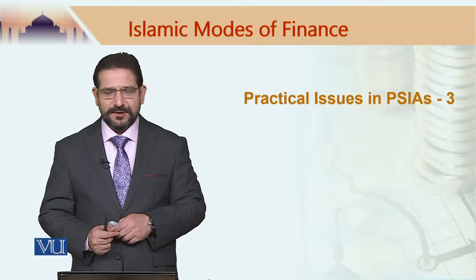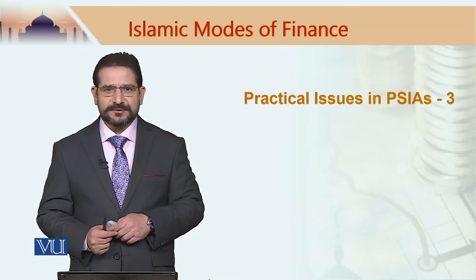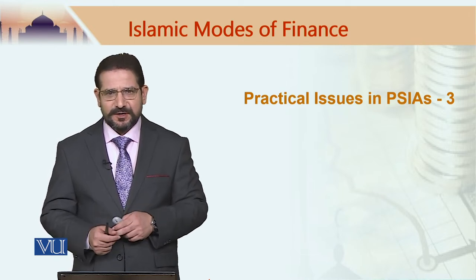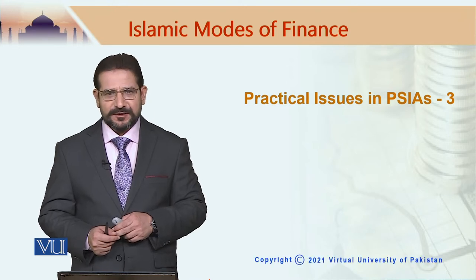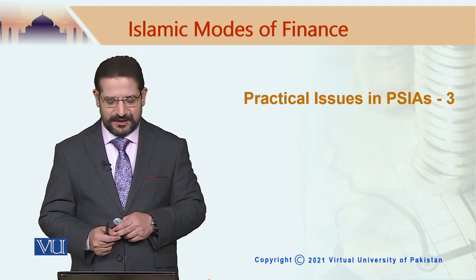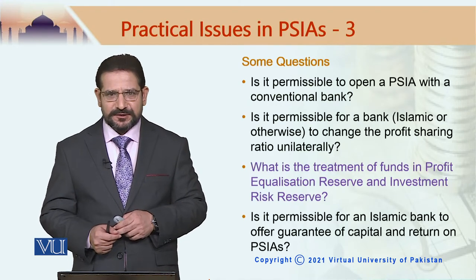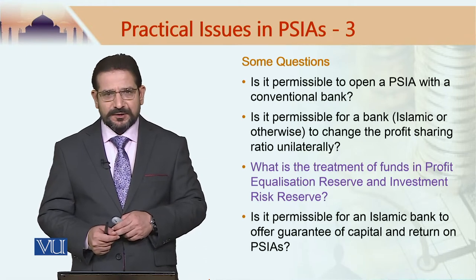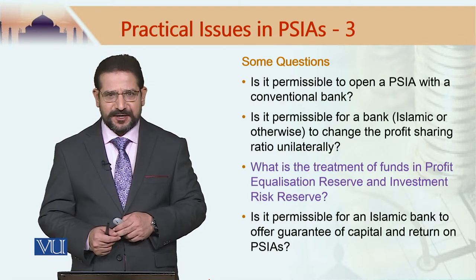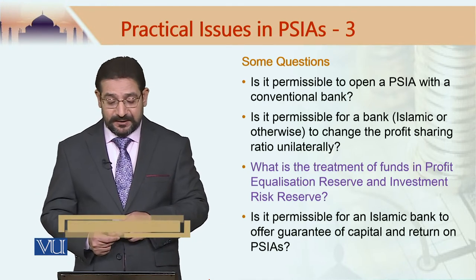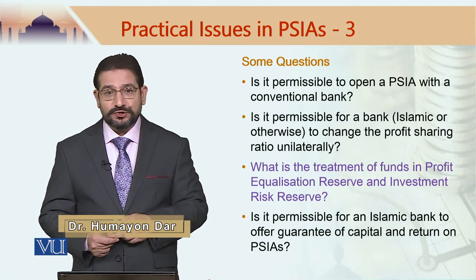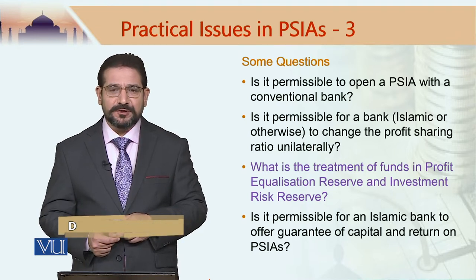In this module, we would continue to answer some of the questions posed earlier. The questions are related to some practical issues in the offering of profit-sharing investment accounts. We have already answered two questions: question number one, is it permissible to open a profit-sharing investment account with a conventional bank? And question number two, is it permissible for a bank to unilaterally change the profit distribution ratio?